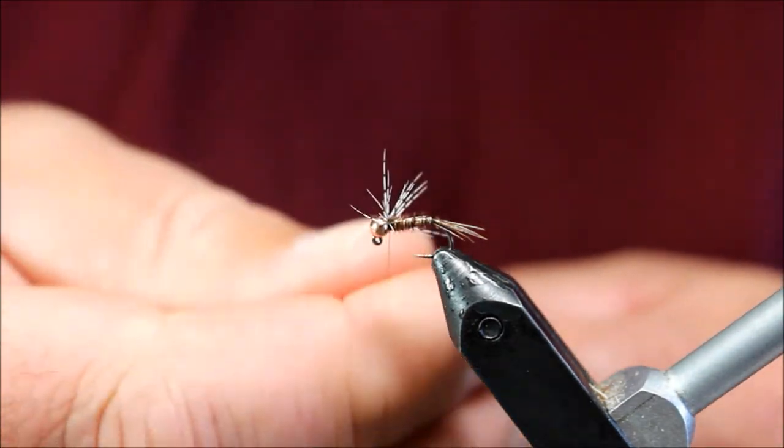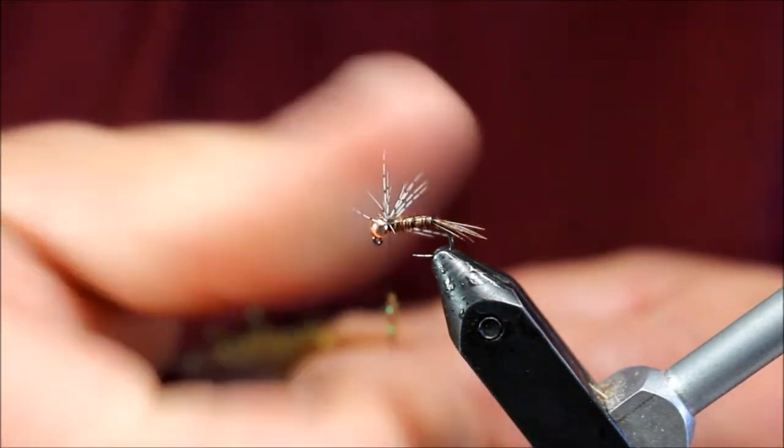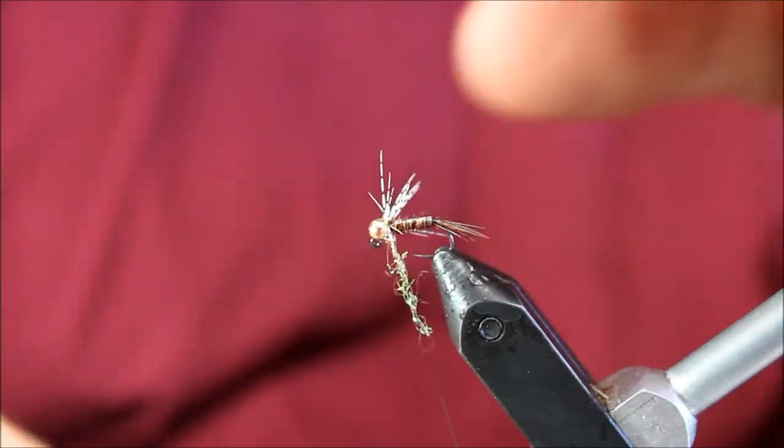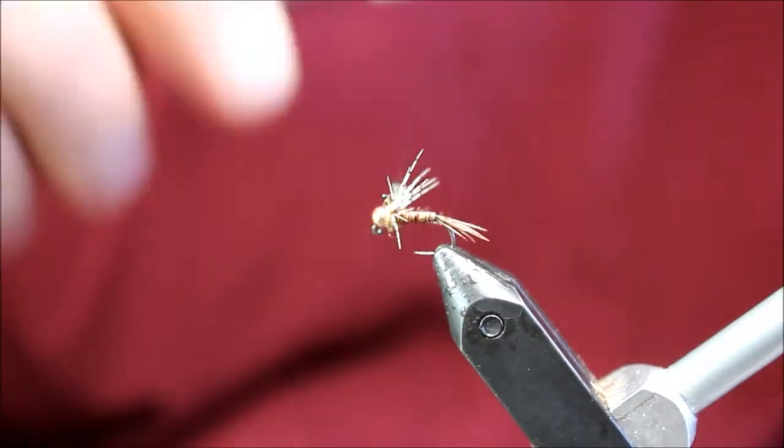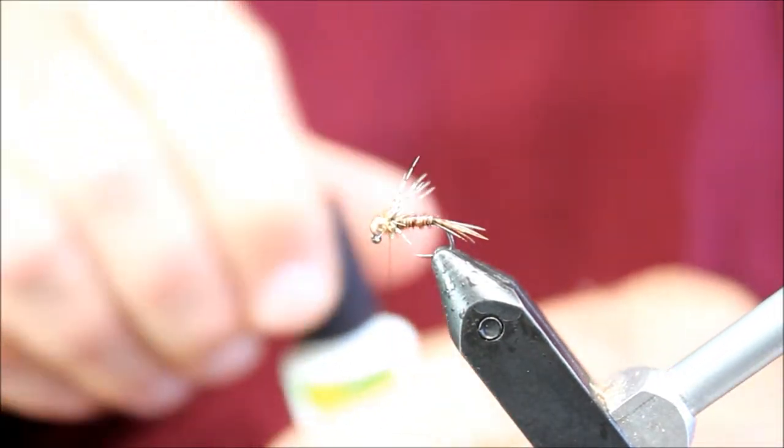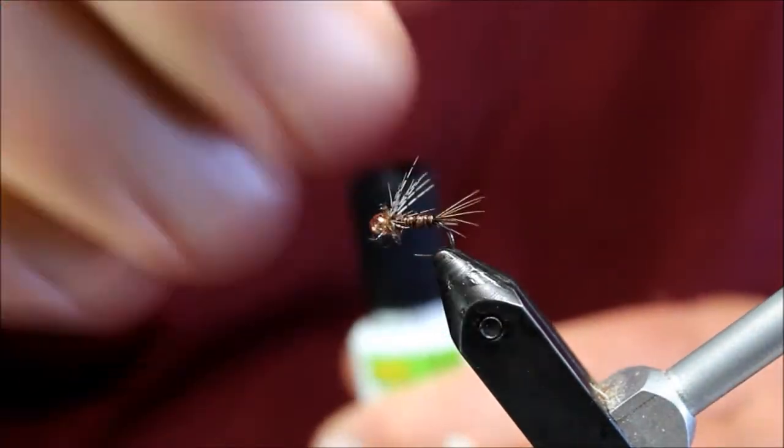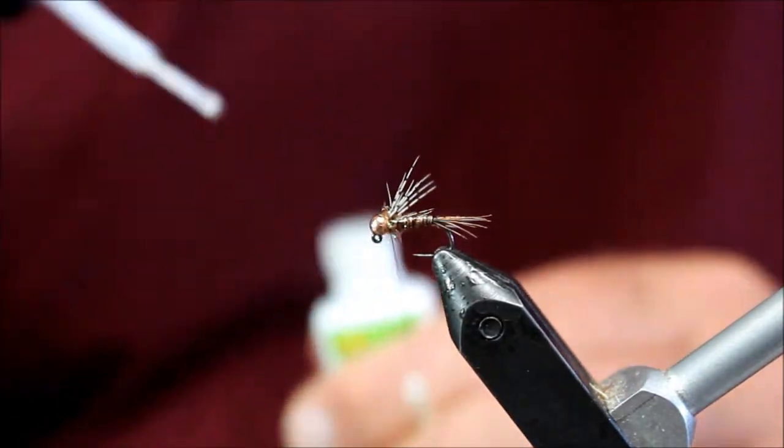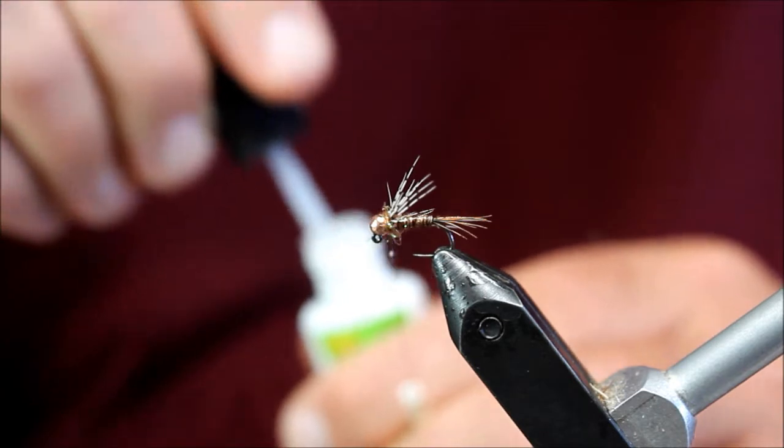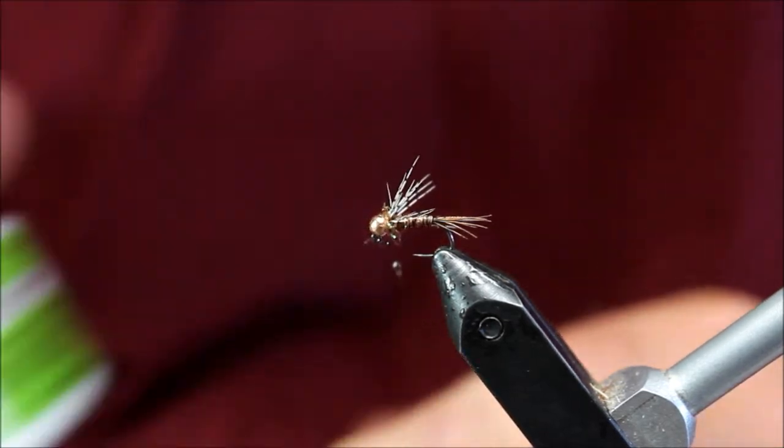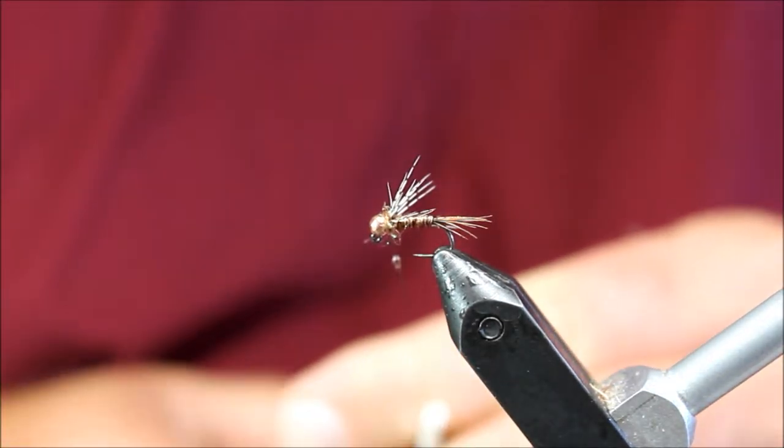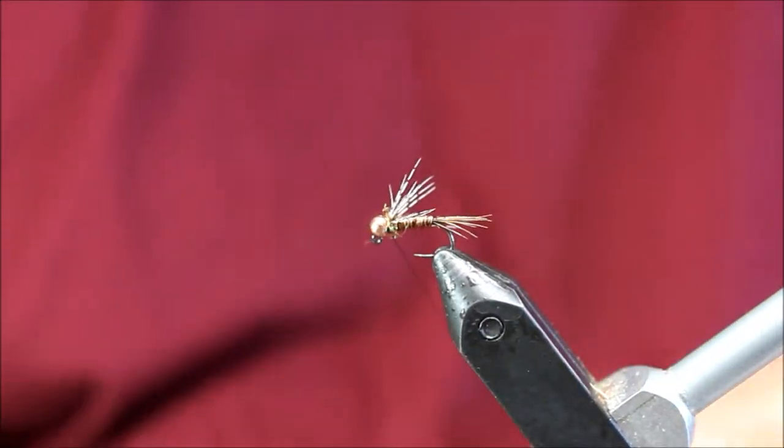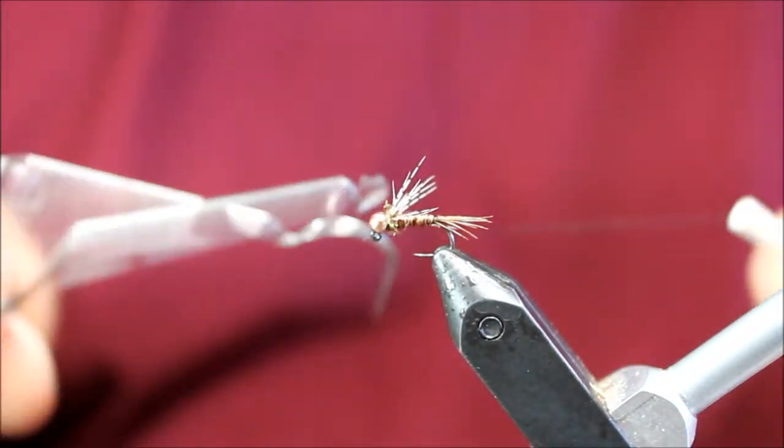A lot of times to make sure that these fibers stay back, I'll take up just a tiny bit of ice dubbing, that's a pheasant tail ice dubbing, and come around up front and a little bit of your favorite head cement. I love the little brush on Zap-a-Gap, that does the trick for me. Wrap that in and whip finish.